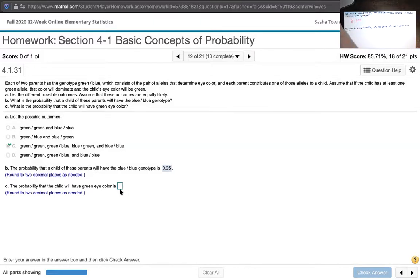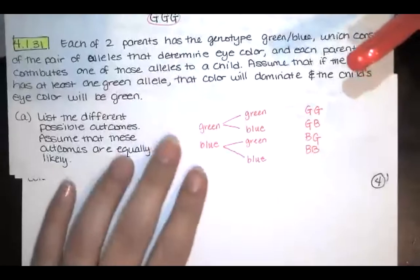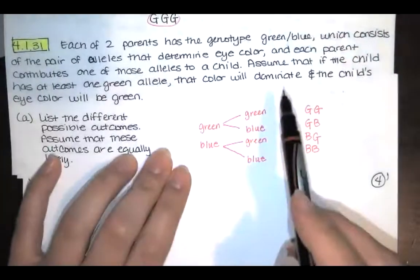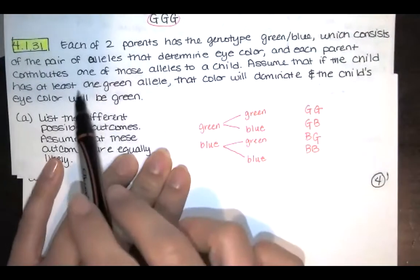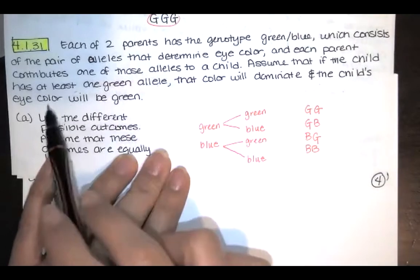And then the last question says, what is the probability that the child will have a green eye color? Well, let's look at that sample space again and think about what the problem statement said. Okay. We're right here. Now the problem statement said, assume that if the child has at least one green allele, that color will dominate and the child's eye color will be green.